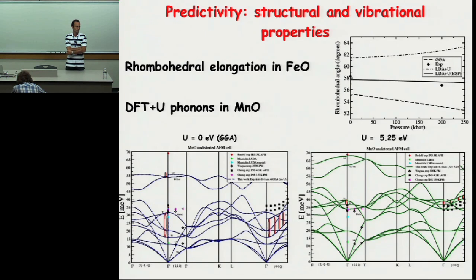Correct, it was self-consistent U that Mateo calculated, or used in Mateo's method. The error went down to 100 to 200 mTB. So it was a huge, dramatic, unequivocal improvement in the energetics. No question about it.